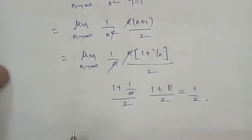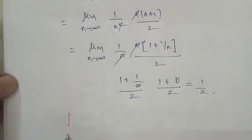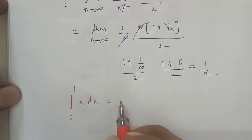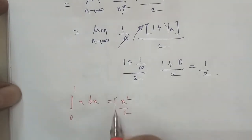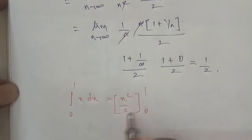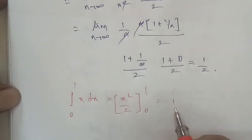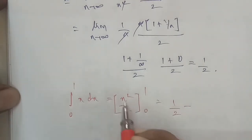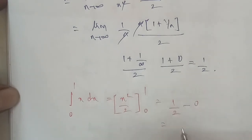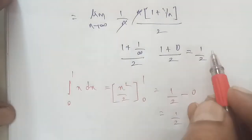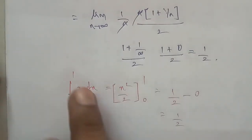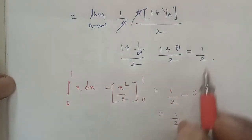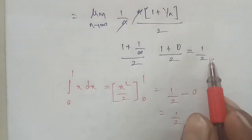Verification: integral 0 to 1, x dx. This gives x squared by 2, with limits 0 to 1. Applying upper limit: 1 squared by 2 equals 1 by 2. Lower limit: 0. Total: 1 by 2 minus 0 equals 1 by 2. So the answer is confirmed as 1 by 2. Thank you.